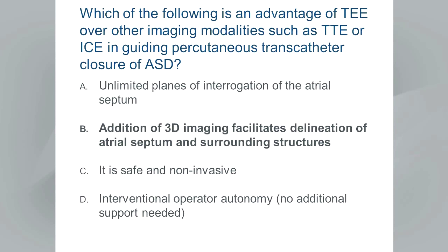Thirty-one percent of the audience said unlimited planes, which is not completely incorrect — TEE offers multi-plane capabilities, but transthoracic and intracardiac echo also offer nearly unlimited planes. TEE is not as non-invasive as transthoracic echo, so that's not an advantage. Interventional operator autonomy is actually a feature of intracardiac echo, where interventionalists can perform procedures and imaging without additional echo colleagues coming to the lab.